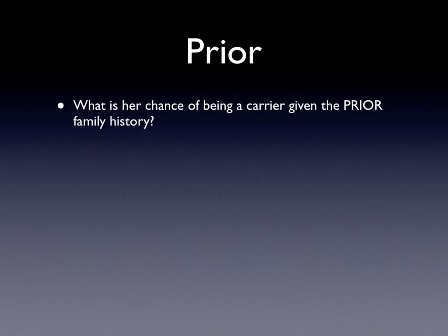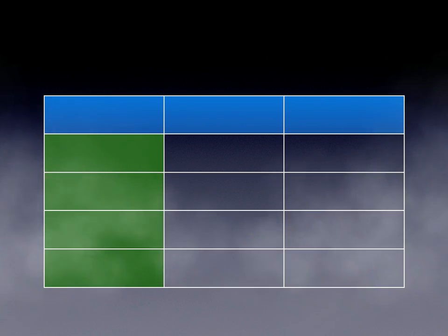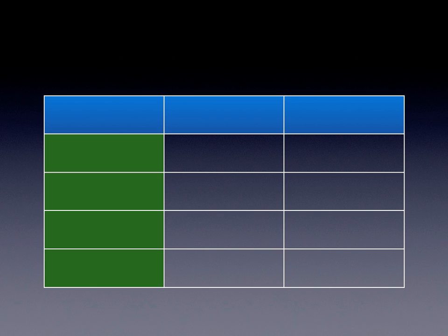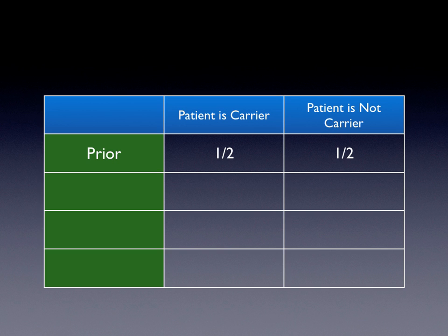Prior. This is basically: what is our chance of being a carrier given the prior family history? It's pretty straightforward. We know the mother was a carrier and she has an affected brother. Since this is X-linked recessive, her chance of being a carrier is just 50% based on family history. So in our table, the prior probability of being a carrier is one-half, and if she is not a carrier, also one-half, given ancestral history.